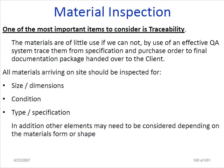Metal inspection - one of the most important items to consider is testability. Metal inspection is very important everywhere. You need to be able to test all the material until the project end. The material is of little use if you cannot, through an effective QA system, trace them from specification and purchase order to the final documentation package handed over to the client.